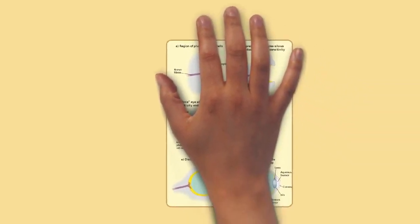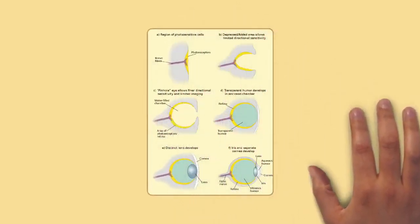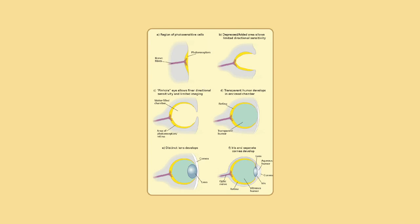The visual system in the human brain is too slow to process information if images are slipping across the retina at more than a few degrees per second. Thus, to be able to see while moving, the brain must compensate for the motion of the head by turning the eyes. Frontal-eyed animals have a small area of the retina with very high visual acuity, the fovea centralis, which covers about 2 degrees of visual angle in people. To get a clear view of the world, the brain must turn the eyes so that the image of the object of regard falls on the fovea.